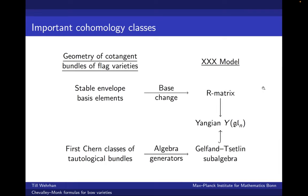There is also a second important family of cohomology classes, namely the first Chern classes of tautological bundles. They have an interpretation on the XXX model side: they are natural algebra generators of a maximal commutative sub-algebra called the Gelfand-Zetlin sub-algebra of the Yangian. This algebra was studied by Tarasov and Nazarov. This well-established picture implies we have a very nice formula for the multiplication of Chern classes of tautological bundles with respect to the stable envelope basis.